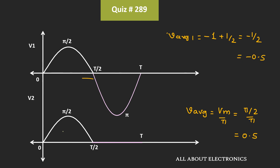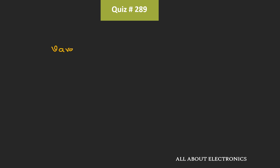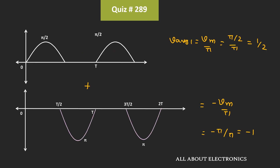The average value of waveform V1 is equal to –0.5, while the average value of waveform V2 is equal to 0.5. If you are not aware of the average value of the half wave rectifier, then using the expression V_avg = (1/T) × integral from 0 to T of V(t) dt, you can find the average value.